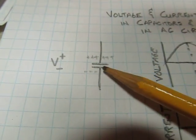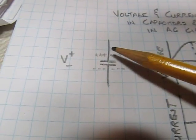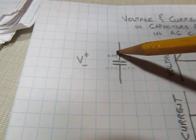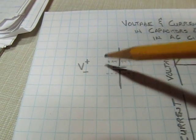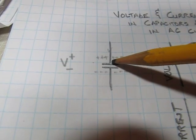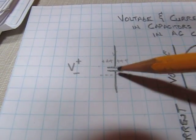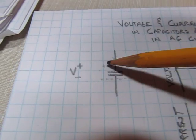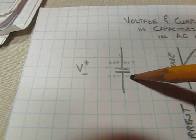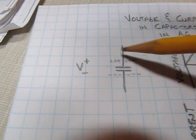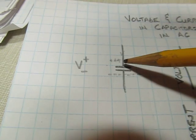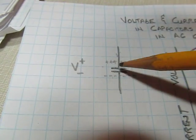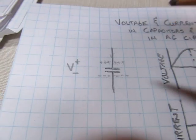Capacitors are just two plates separated by an insulator, so from a DC standpoint it's an open circuit. Current only flows in or out of a capacitor if the voltage is changing across it. If the capacitor has some voltage across it, it's because there's excess electrons on one plate and a lack of electrons on the other. To change that voltage you have to change the amount of charge on the plates, and that constitutes current flow — which is why there's current flow in capacitors for AC signals.